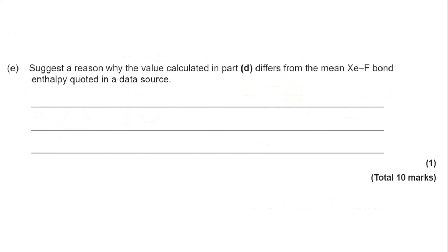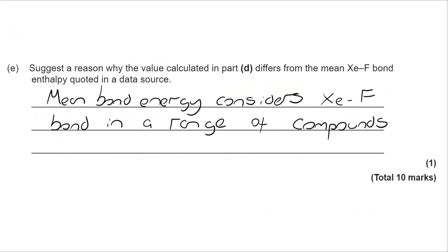And finally we want to know why the calculated value would differ from the mean Xe-F bond. Now there's a fairly standard answer to this question which comes up a lot. The Xe-F bond can occur in a range of compounds. The mean bond enthalpy takes into account all of those different compounds whereas we've calculated specifically for XeF4.